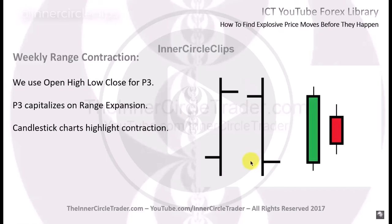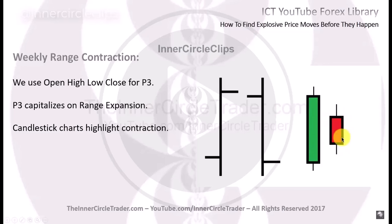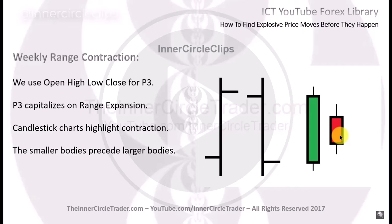So how can we find that? If this was the body of, say, a Tuesday, and then Wednesday we had this type of body — we have a smaller body candle — which means that we could see a large range day on Thursday or Friday, because smaller bodies precede larger bodies. You want to anticipate when price is going to have an explosive or large range or big move, and it's going to happen by studying the bodies.